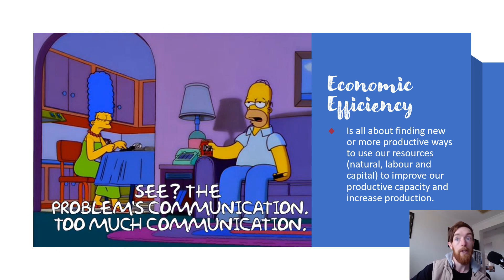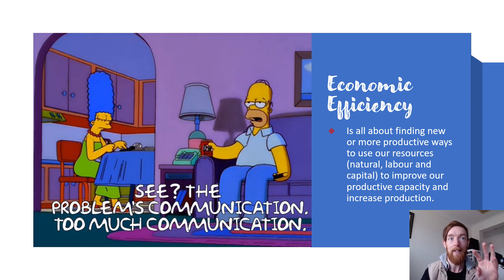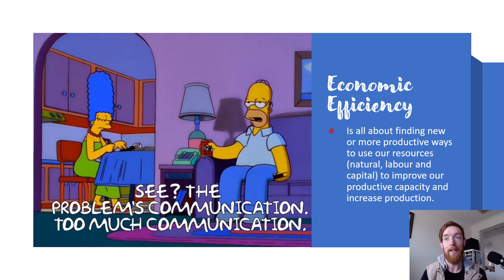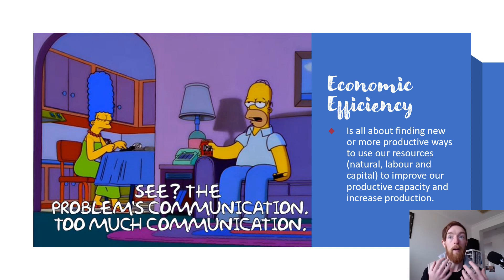So economic efficiency is all about finding either more productive ways or choosing our resources that helps improve our productive capacity and increase our production overall. I've got an image of Homer Simpson saying the problems of communication — too much communication. Part of my issue with working as a teacher is that often there are meetings that take up to an hour that are just information delivery that could be an email. And that hour could have been used for different production — used a lot more effectively and we'd be more efficient.